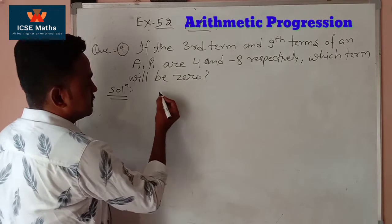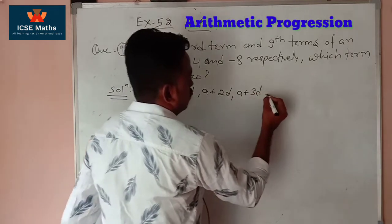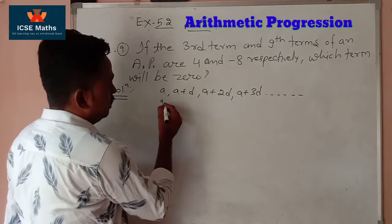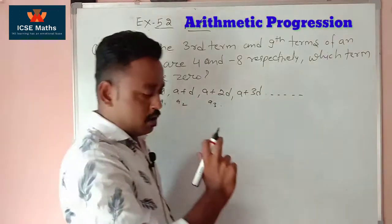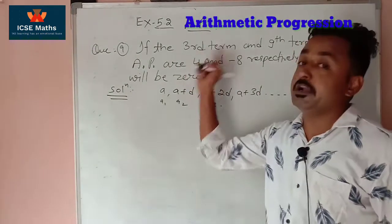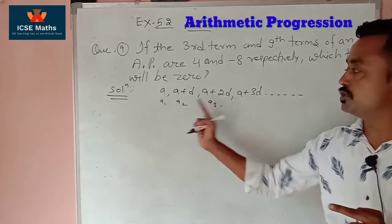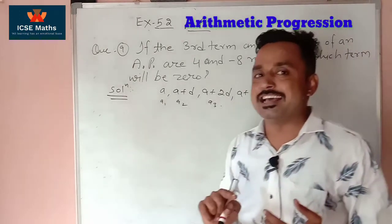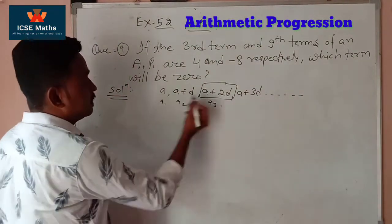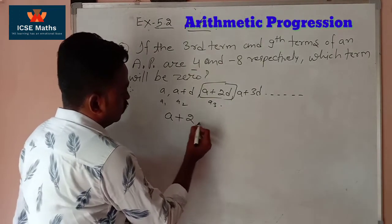You know the standard form of an AP is: a, a+d, a+2d, a+3d, and so on. The third term means one less in the exponent of d — so the 3rd term is a+2d, the 4th term is a+3d, the 7th term is a+6d. So the third term a₃ equals a+2d, and the given value is 4. Therefore equation 1 is: a + 2d = 4.